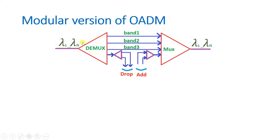This first demultiplexer demultiplexes the wavelengths in terms of bands. One should understand the difference between wavelength and band — a band is a bunch of wavelengths. So the wavelengths are demultiplexed into bunches referred to as bands: band one, band two, band three, and so on. One of these bands is then further demultiplexed into individual wavelengths, which are dropped. So at the band level there are bands, but after the second demultiplexer there are individual wavelengths. Wavelengths to be added are combined by the second-level multiplexer into a band, and multiple bands are combined by the main multiplexer so that multiple wavelengths are present on the output fiber.